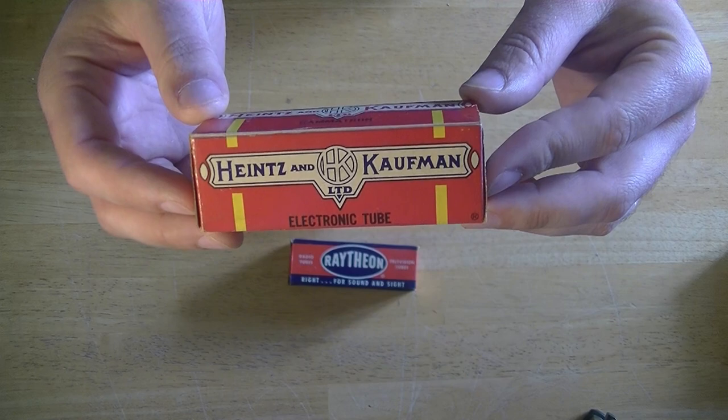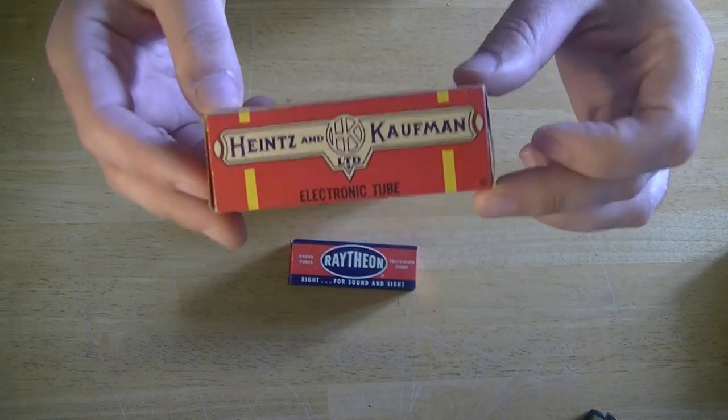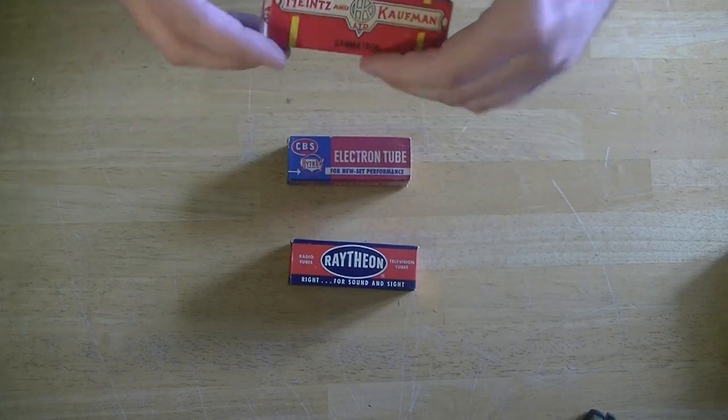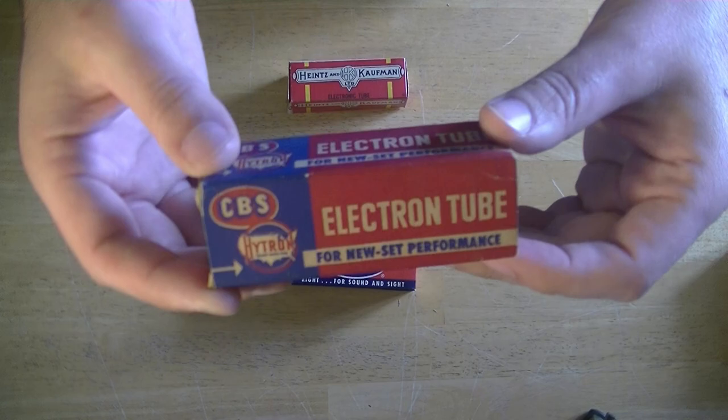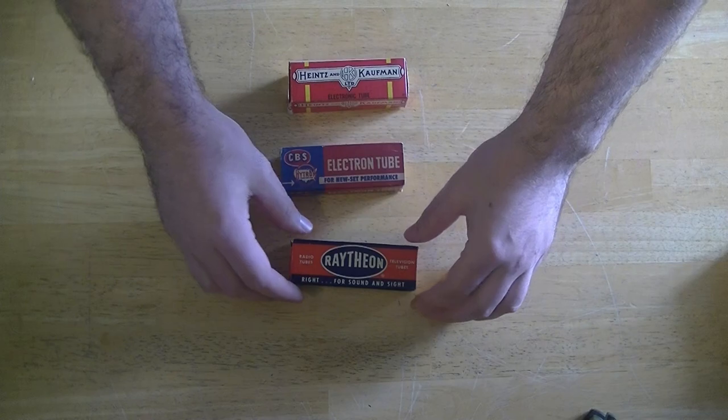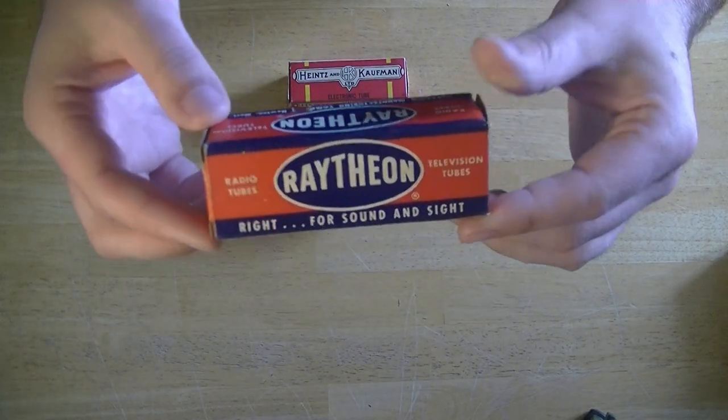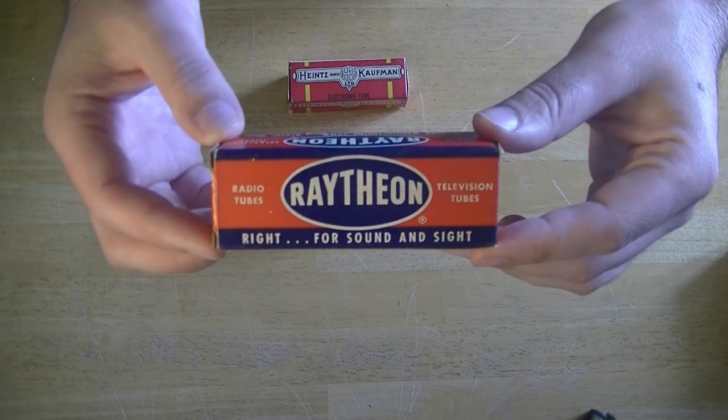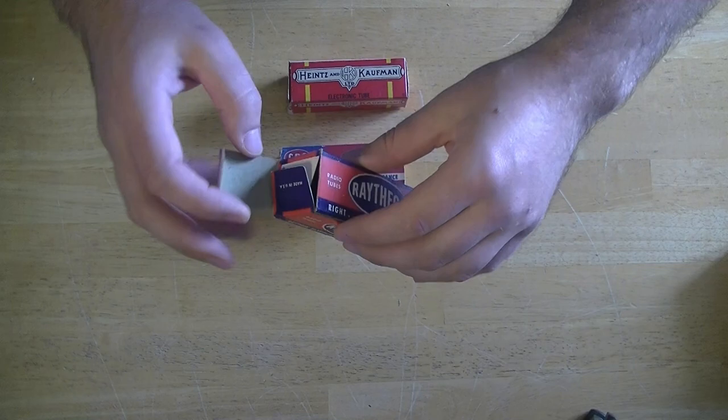I just absolutely love these old boxes. There's a great looking CBS Hytron. And you've got to remember, most of these boxes are close to 80 years old at this point. They look absolutely incredible. Let's take the tubes out here.